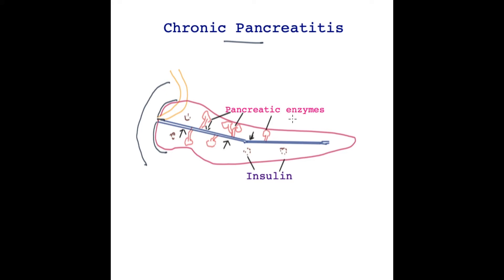The pancreas has two main functions. It produces pancreatic enzymes. In this cartoon you can see the main pancreas tube connected to a large number of smaller tubes that produce enzymes or chemicals that break the food down. These are passed down into the main tube and then into the small bowel to meet with the food coming down.